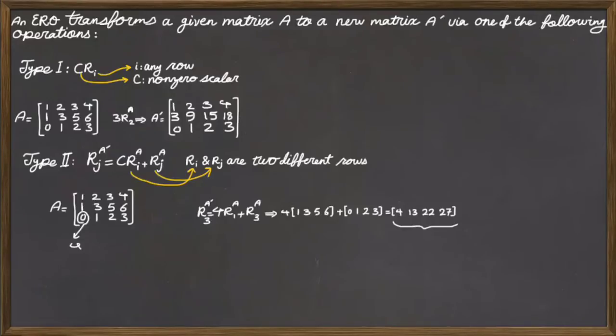This is exactly what has been defined as the second type of elementary row operation, where 4 is our C, this vector is R1, and we add it with R3. Now, what you need to pay attention is the resulting vector, which is CR1 plus R3, it always replaces this row, which is R3.